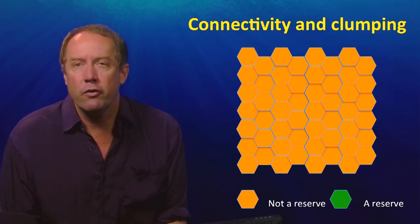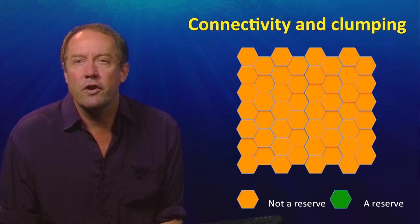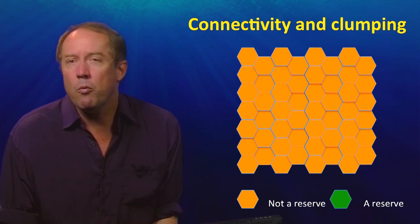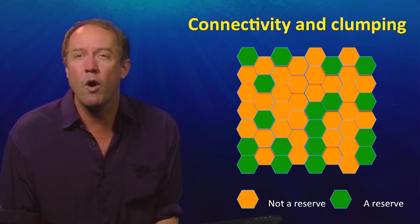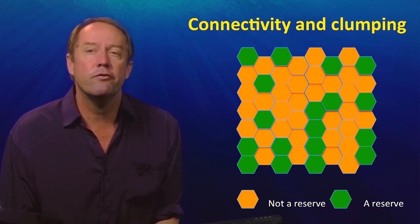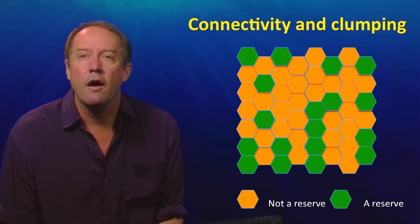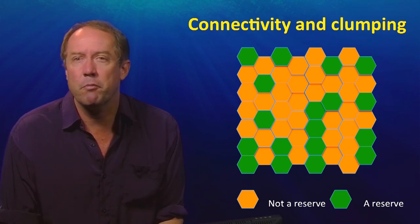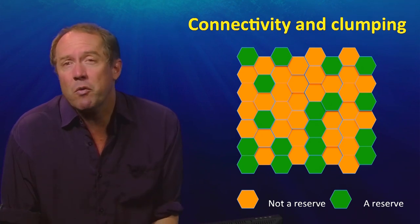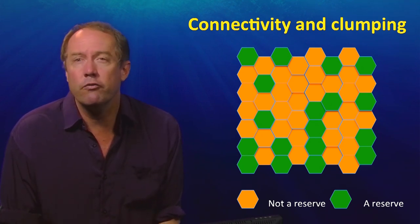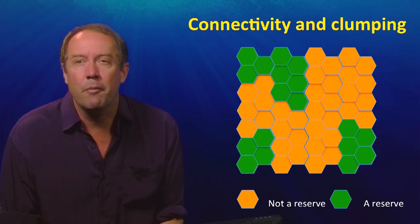Finally, let's return to the issue of connectivity and clumping. We have a potential set of sites that could go into a marine protected area and meet our representation goals, but we would often end up with a reserve system that was quite scattered. Although scattered systems may be efficient, representative, and adequate, they are hardly manageable from the perspective of policing those areas. So the next thing we want to do is clump those areas while still achieving our efficiency and representation objectives.